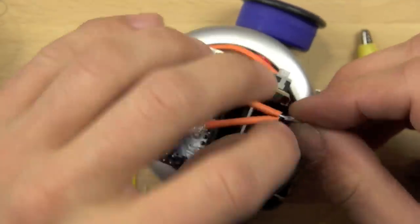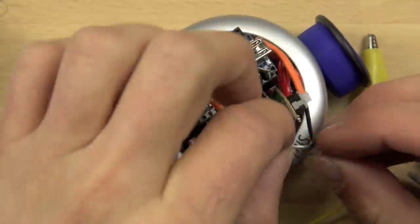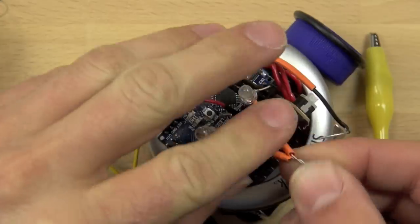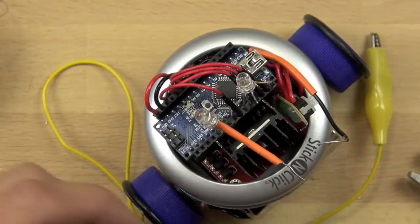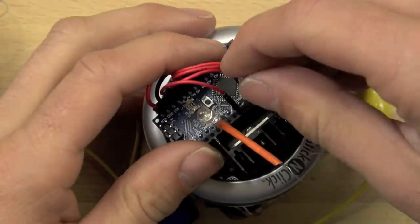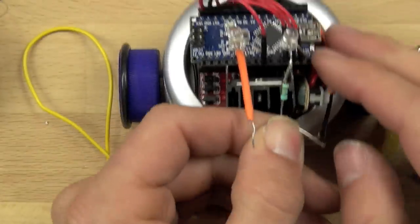And we'll twist those together with the wire that is coming from the negative side of our motor controller or the negative output of the motor controller. So it's kind of tricky to get these to go together and you can see that I actually broke the lead on the LED because I moved it around too much.